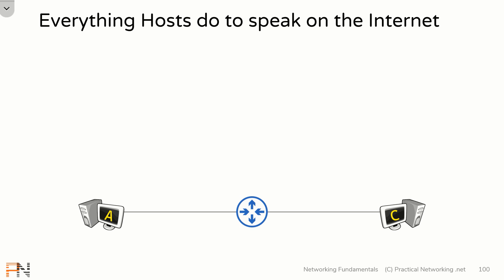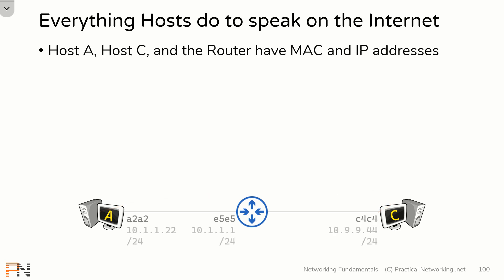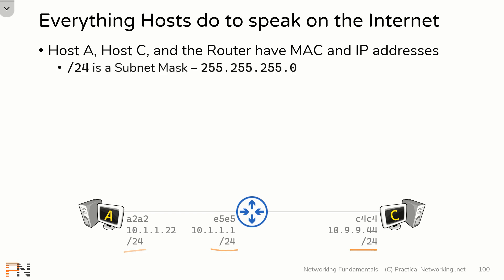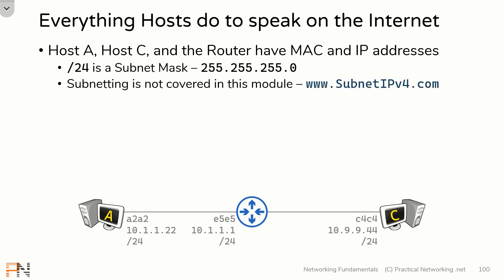We're going to use this topology to show you everything host A does to send data to host C. Both of our hosts and our router have a MAC address and IP addresses. I'm only showing you the short version of the MAC address to conserve screen real estate. This /24 you see on all of them is simply another way of representing the subnet mask, which defines how big a particular network is. We are not going to be covering subnetting in this module.